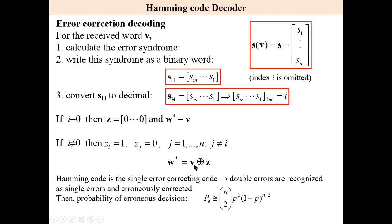We add error pattern to the received word to obtain the decision. Please observe that Hamming code is a single error correcting code and double errors are recognized, however erroneously corrected. They are treated as single errors. Then probability of erroneous decision for Hamming code is around number of all, probability of all double errors. This is probability of erroneous decision of Hamming code.